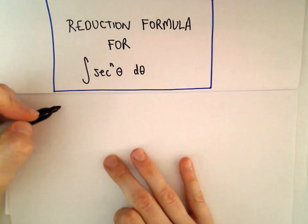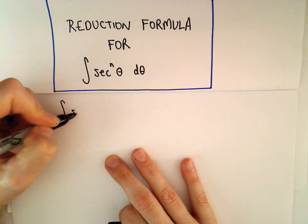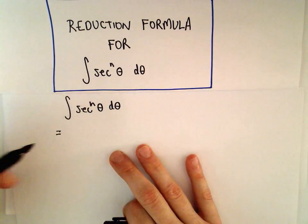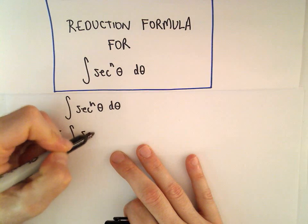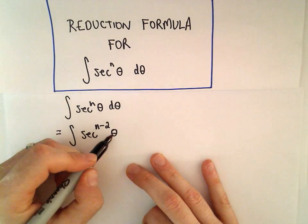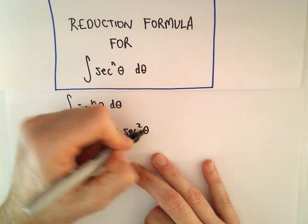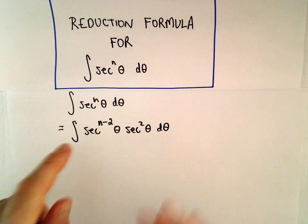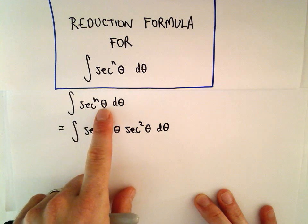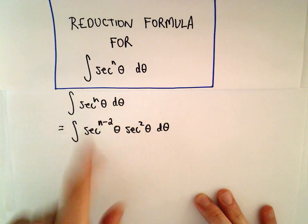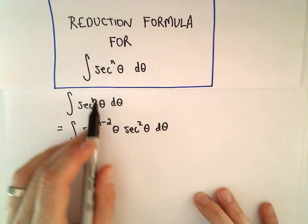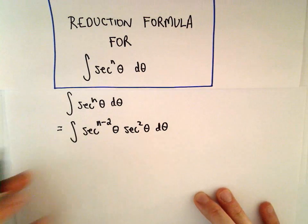To get started, the first thing I'm going to do is break this up. I'm going to write this as sec^(n-2)(θ) times sec²(θ)dθ. If this was already sec² or just sec(θ), we already have antiderivative formulas for those. So we're making the assumption here that if you were going to use this formula, your power n would be 3 or larger.